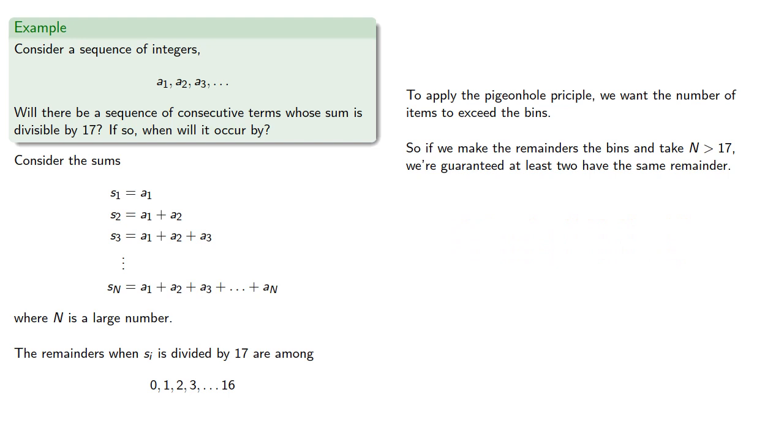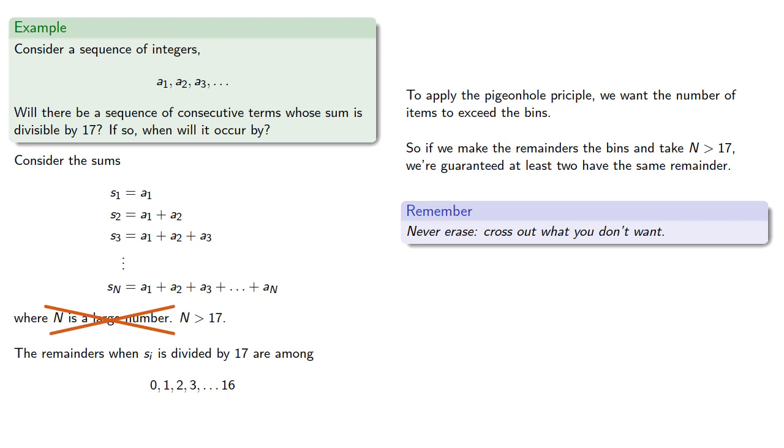So we'll fix our assumption. Now a good habit to get into is never erase, cross out what you don't want. So here N isn't just a large number, it's actually N is greater than 17. And since there are N greater than 17 sums and only 17 possible remainders, at least two of the sums have the same remainder.